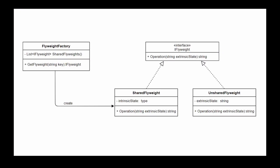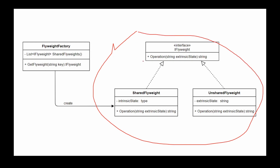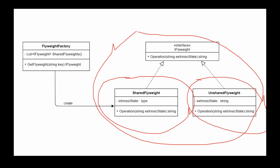If we look at the UML diagram, we see that the flyweight pattern contains flyweight objects which are separated into the shared flyweight and the unshared flyweight. The shared flyweight is used by more than one instance, and the unshared flyweight is used by only one instance. The flyweight factory is responsible for returning the correct shared flyweight object.